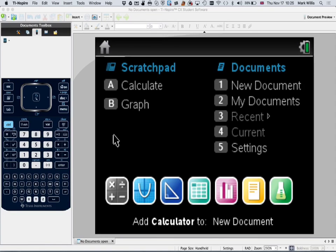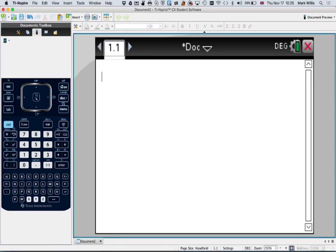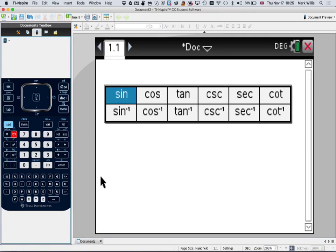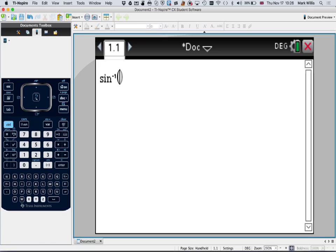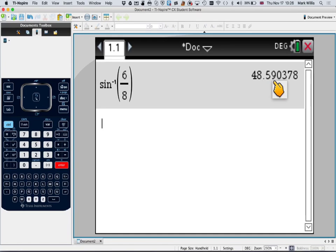First go to a calculation mode, check that the calculator is in degree mode, it is, and then go to the trig function and select sine to the minus 1, and put 6 divided by 8, arrow key, enter, and we get an answer of one answer of 48.59.